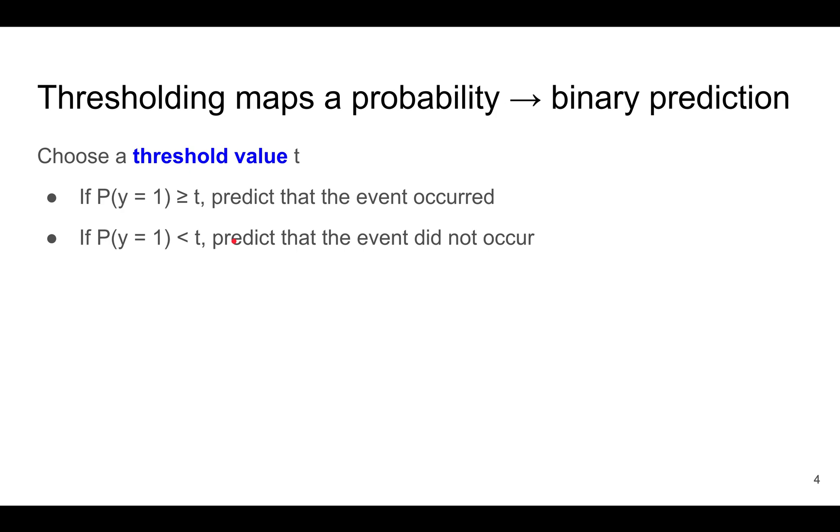One very easy way to get a yes or no prediction from a probability is to use thresholding. First, you need to choose a threshold value t and predict that the event occurred for observations with probabilities greater than t, and predict that the event did not occur for observations with the probability less than t.